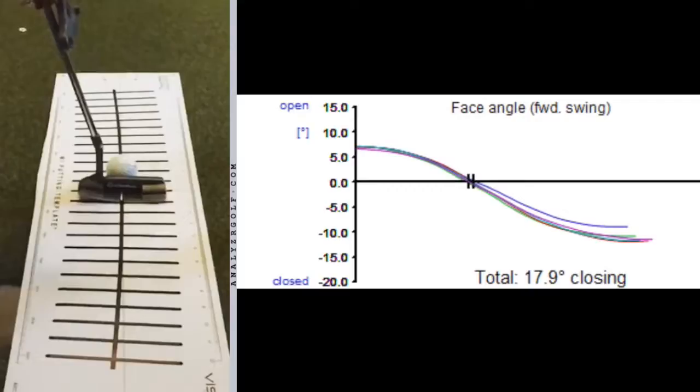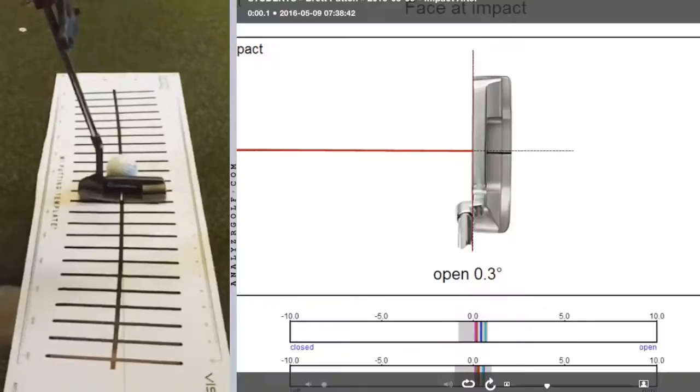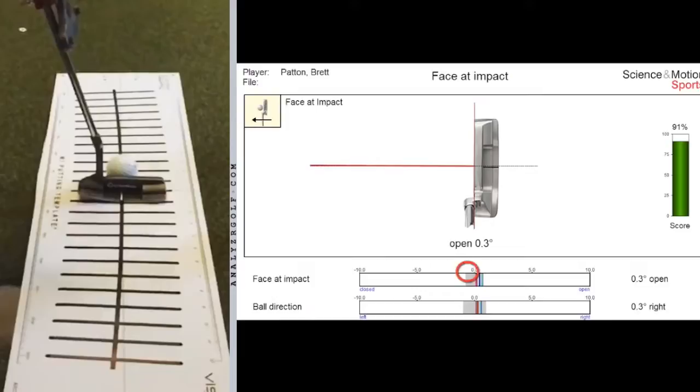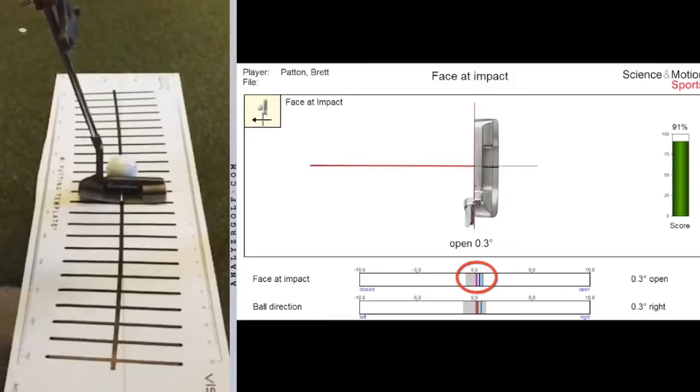Also, the face at impact numbers afterwards, much tighter dispersion pattern, as you'll notice here across the bottom, all of those face numbers within half a degree of the target line, and going to provide Brett much better end results here at the end of the day.